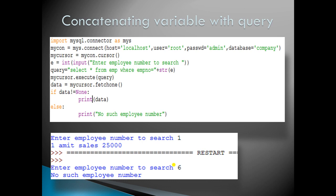The first method is concatenating a variable with the query. You can see a Python code written here with its corresponding output. We import mysql.connector as mys. Then mycon is our connection object, connecting to localhost, with user root, password admin, and database company. Then mycursor is created using mycon.cursor() for executing queries.